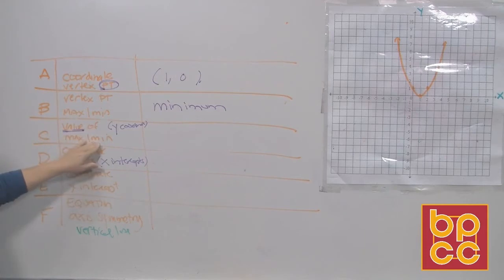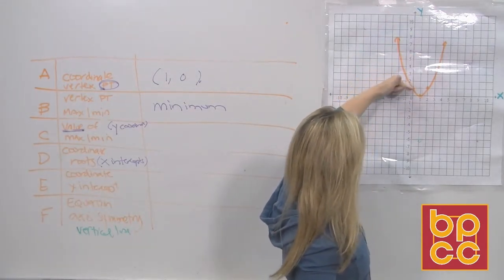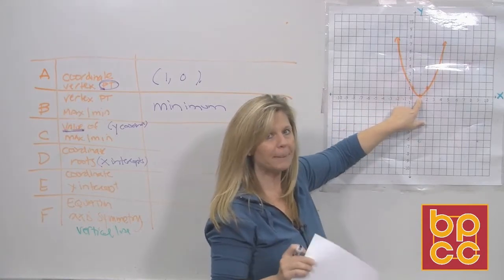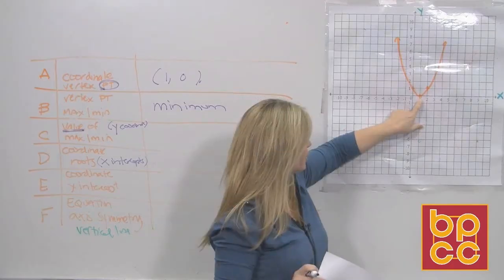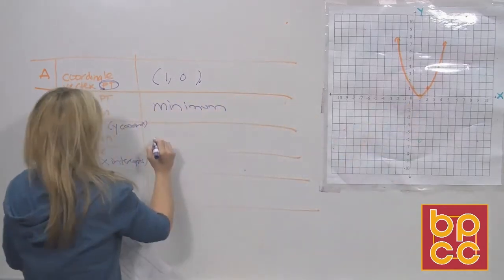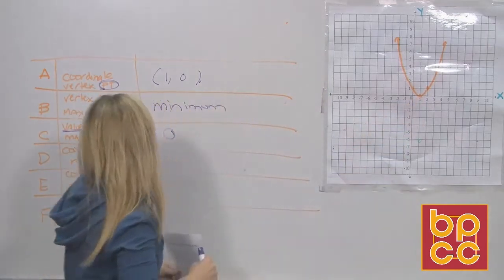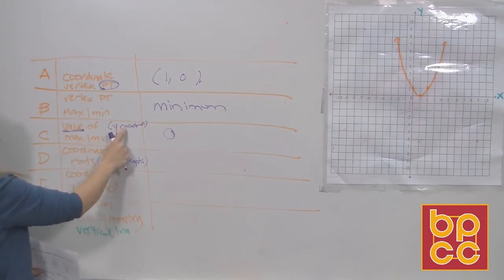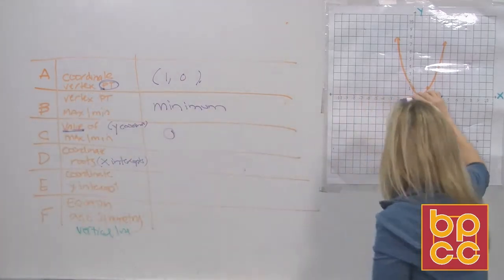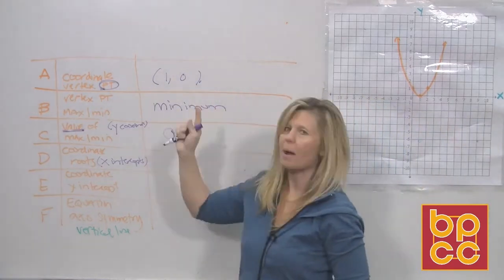They're going to ask the value of the minimum — the value is the y value. This parabola is going to keep going up on the y-axis, so this is going to be its lowest y value. When they ask the minimum value, they're asking the y value. The x value of this point is 1 — I don't want the x value, I want the y value, which is 0. So the minimum is 0. When you give the value of the max or min, you look at the y coordinate of the vertex point.